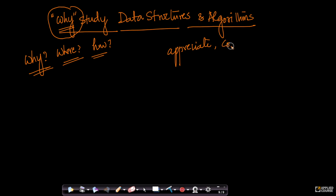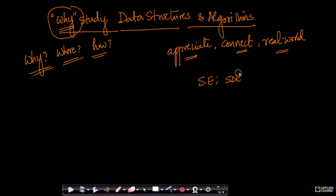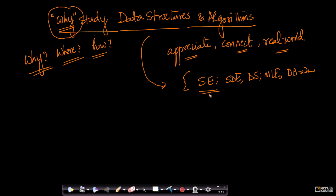You'll be able to connect the dots and understand why you are learning this concept — how whatever data structure or algorithm you're learning is connected to the real world. How you, as a software engineer eventually, since most people studying computer science will become software engineers, software development engineers, data scientists, machine learning engineers, database admins, or whatever your role — how everything you learn in data structures and algorithms is going to be useful for the next 30 or 40 years of your career.